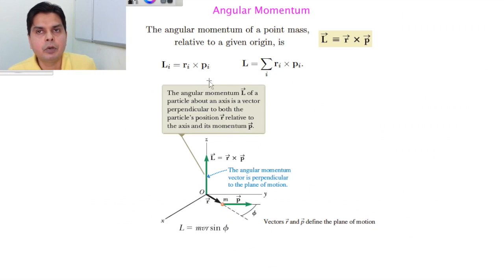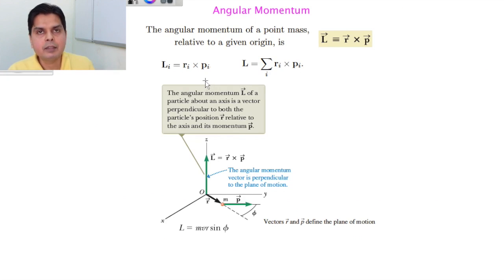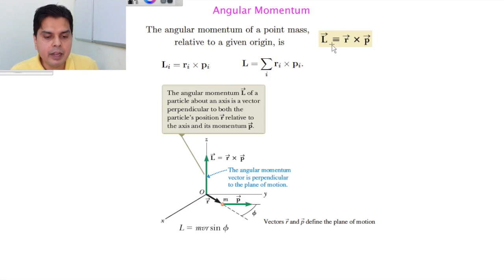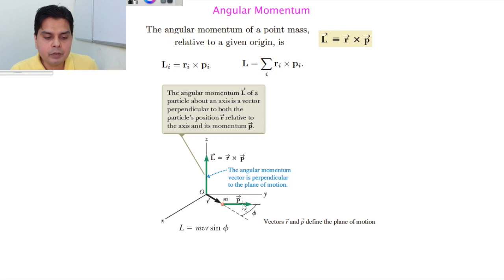Now we will consider the angular motion of a particle or rigid body. Just as there is linear momentum in translational motion, there is a vector quantity called angular momentum in rotational motion. Angular momentum is defined as L = r × p.